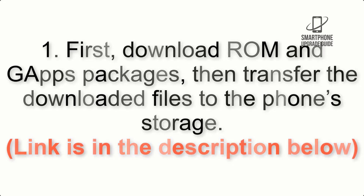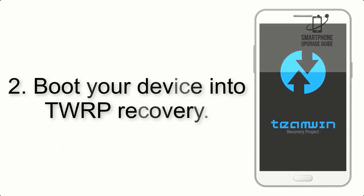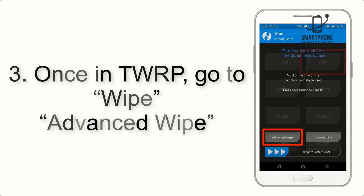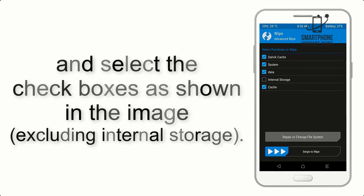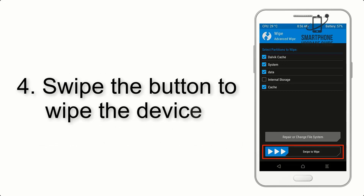The link is in the description below. Step 2: boot your device into TWRP recovery. Once in TWRP, click on Advanced Wipe and select the checkboxes as shown in the image, excluding internal storage.